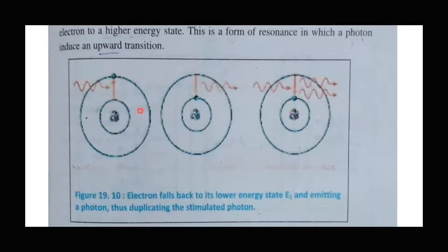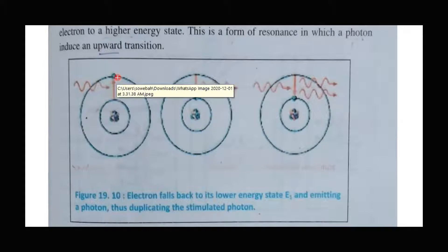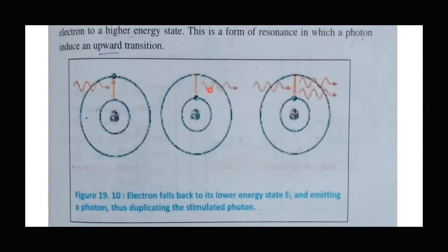In simple words, spontaneous emission is the emission of photons due to the de-excitation of the electron from the upper energy level to the lower energy level, without any external cause. The electron emits from its own during its transition — this is spontaneous emission.